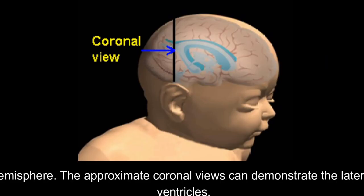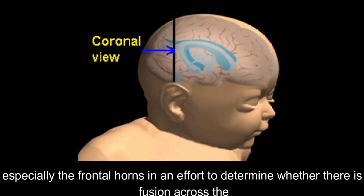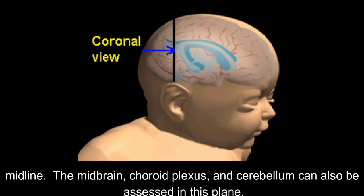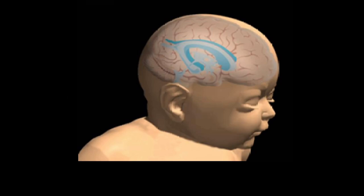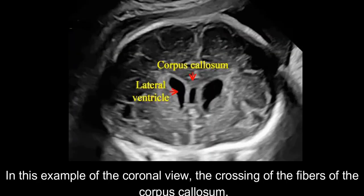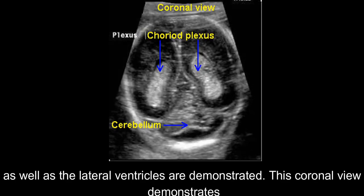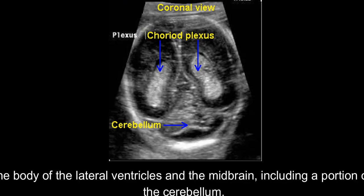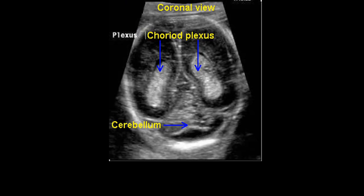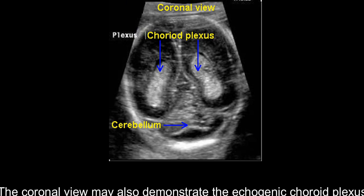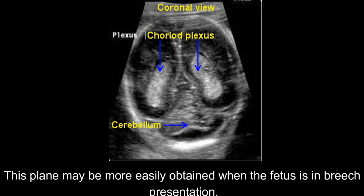The approximate coronal views can demonstrate the lateral ventricles, especially the frontal horns in an effort to determine whether there is fusion across the midline. The midbrain, choroid plexus, and cerebellum can also be assessed in this plane. In this example of the coronal view, the crossing of the fibers of the corpus callosum as well as the lateral ventricles are demonstrated. This coronal view demonstrates the body of the lateral ventricles and the midbrain, including a portion of the cerebellum. The coronal view may also demonstrate the echogenic choroid plexus. This plane may be more easily obtained when the fetus is in breech presentation.